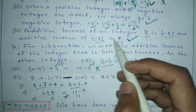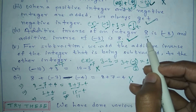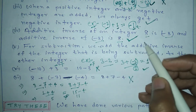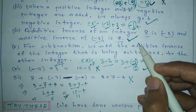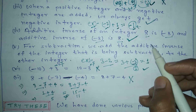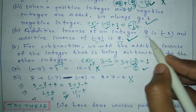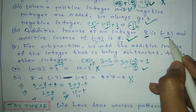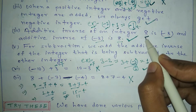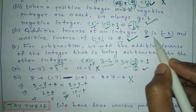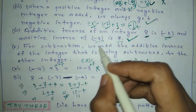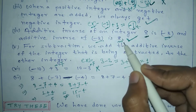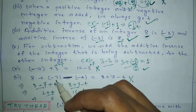The next point is about additive inverse: the additive inverse of an integer 8 is minus 8. We know that the additive inverse of any number is its opposite. The opposite of 8 is minus 8, and the opposite of minus 8 is 8. So this point is correct.